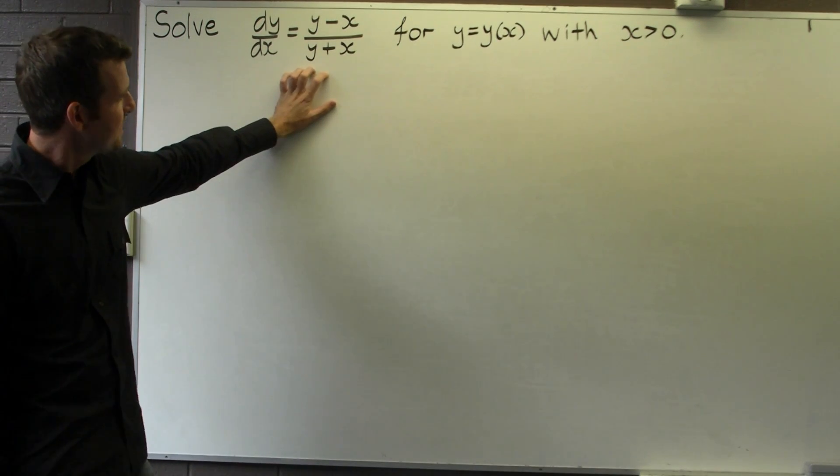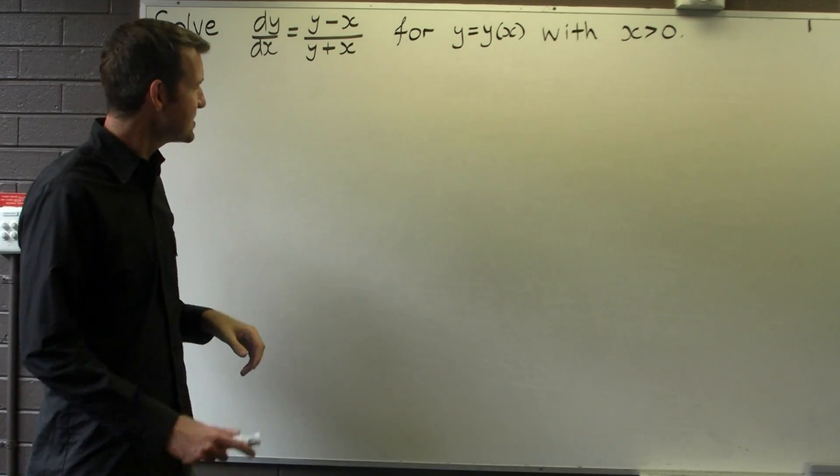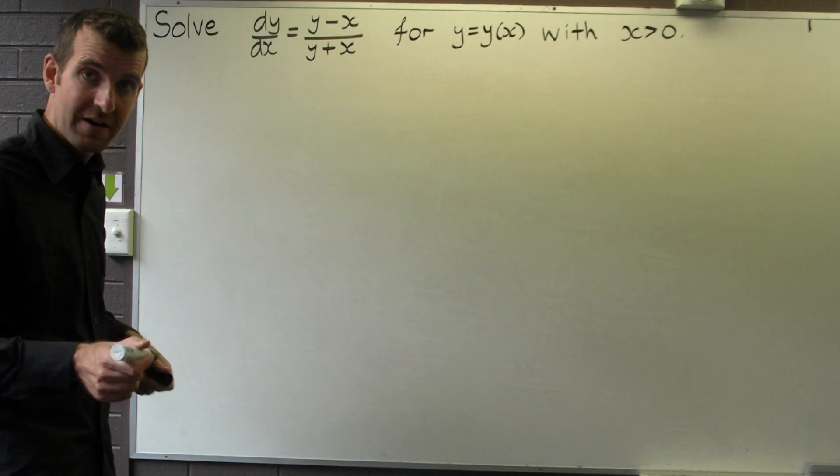If you look at this one, it's not separable and it's not linear, so it actually turns out that this is a so-called homogeneous first order ODE.